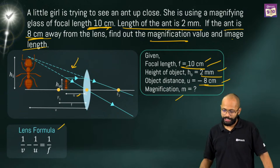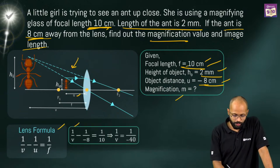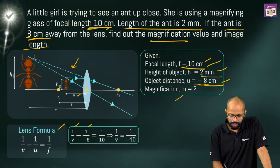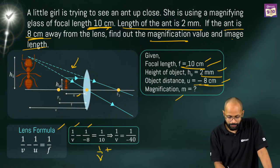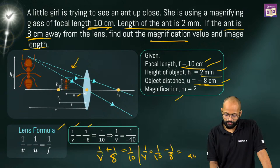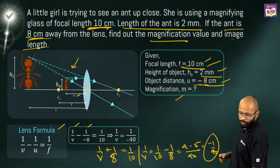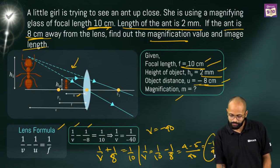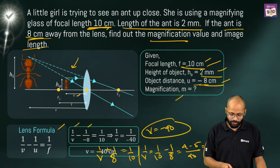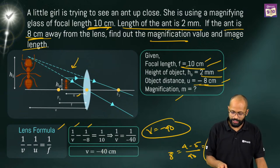Using the lens formula: 1/v minus 1/u equals 1/f, so 1/v minus 1/(minus 8) equals 1/10. This becomes 1/v plus 1/8 equals 1/10. So 1/v equals 1/10 minus 1/8. LCM is 40: that gives (4 minus 5) over 40 equals minus 1/40. Therefore V equals minus 40 centimeters.